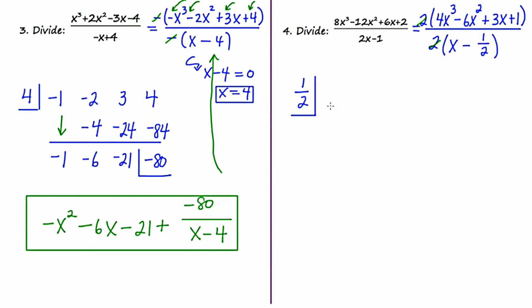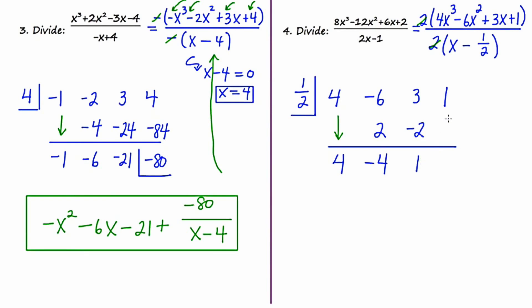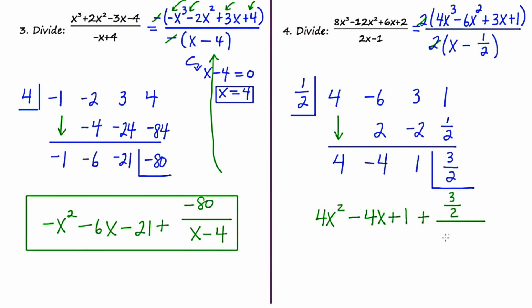I'm going to assess the top row, which will be 4, negative 6, 3, and 1 — no placeholders necessary. The first term drops down. 1 half of 4 is 2. Adding gives negative 4. Multiplying gives negative 2. Adding gives 1. Multiplying gives a half. 1 and a half is 3 halves, and I put that final result in its own cubby. The degree of the dividend was 3, so our answer is of degree 2: 4x squared minus 4x plus 1 plus 3 halves over x minus 1 half.